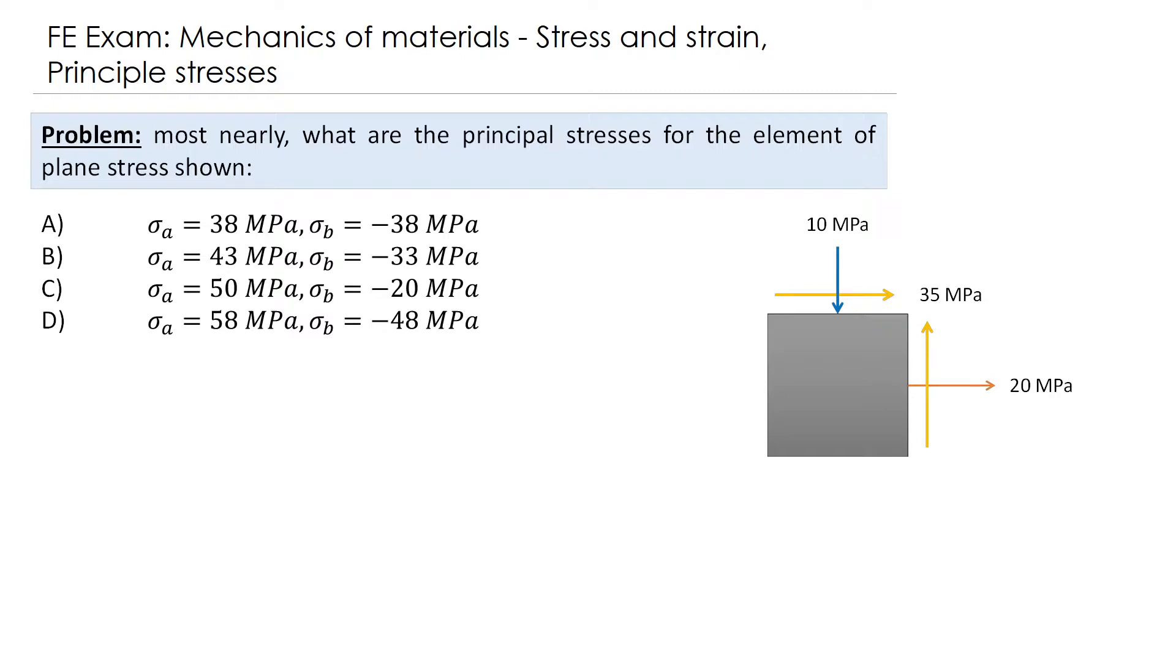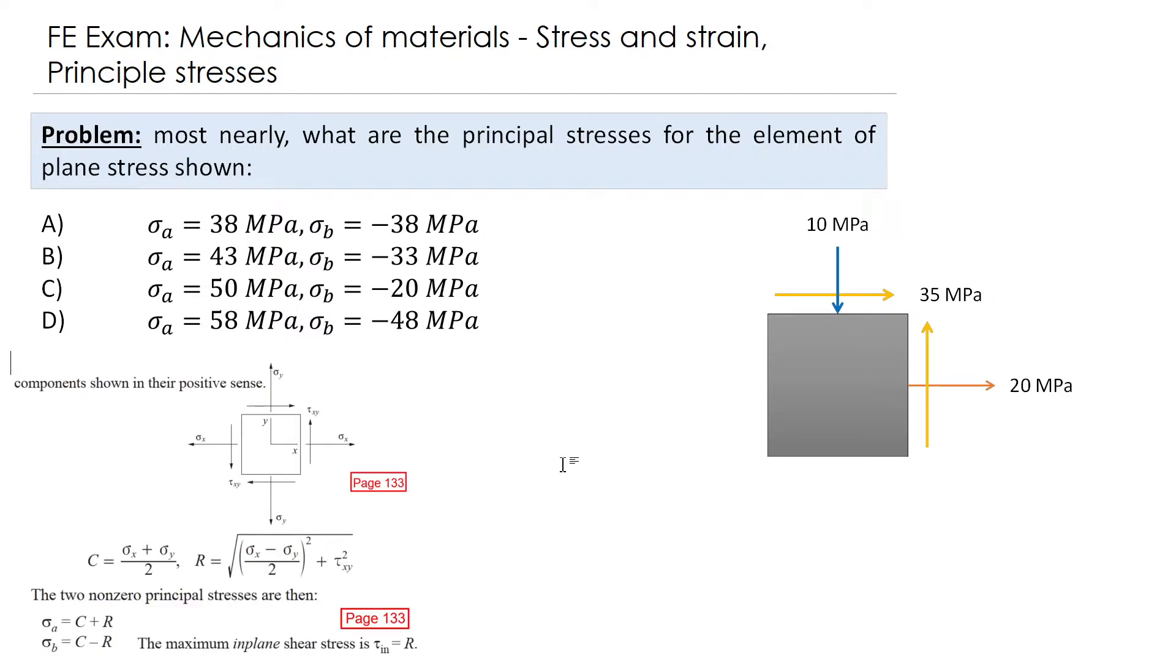When we have such problems, we go to the stress and strain subsection at page 133 at the reference manual. For these questions, we need to pay attention carefully for the sign conventions for sigma x and sigma y. You can see here that sigma x is going in the positive direction, going outside from the element, and the same for sigma y, it's going also out from the plane.